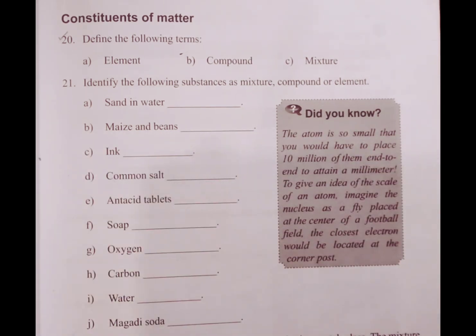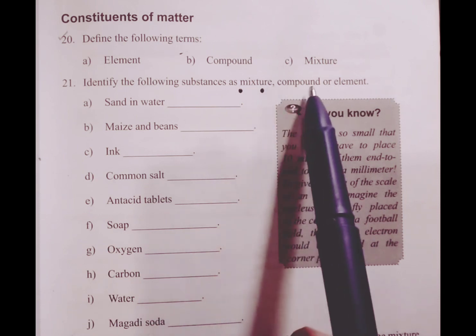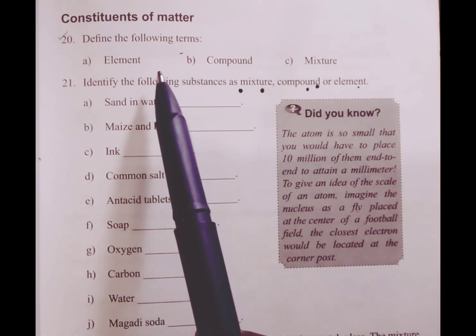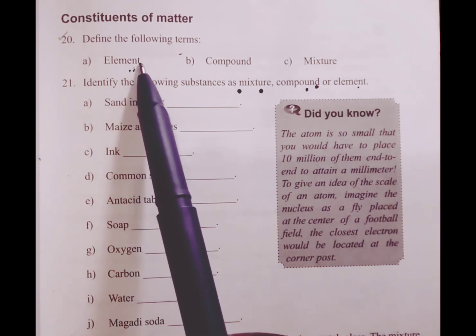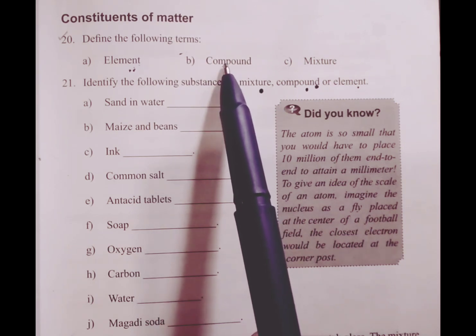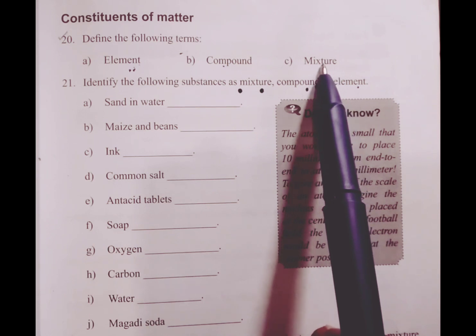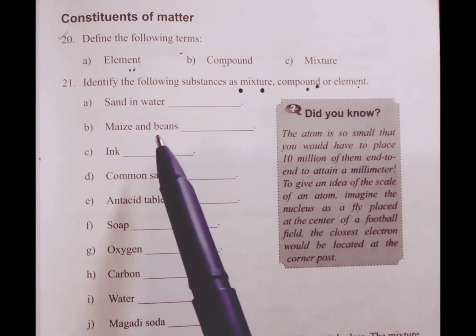We move to the next questions. We have to identify the following substances as either mixture, compound, or element. We have already defined an element as anything that cannot be split into any simpler material by any chemical means, a compound as a substance made up of two or more elements which are chemically combined, and a mixture as the physical combination of two or more elements in which the individual elements do not change. So we identify if the following are either a mixture, compound, or an element.